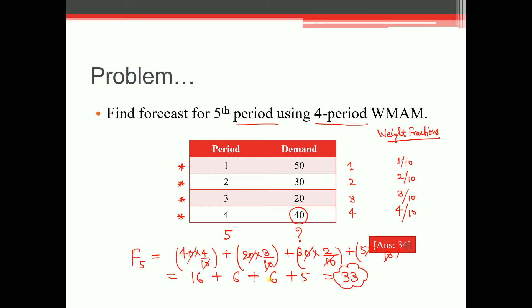Verifying: 16 + 12 + 5 = 33. That is the correct answer. The key idea is to assign weights to each period and then proceed similarly to the standard moving average method.